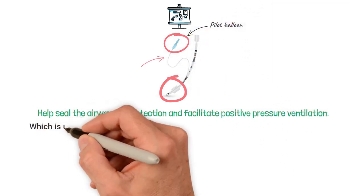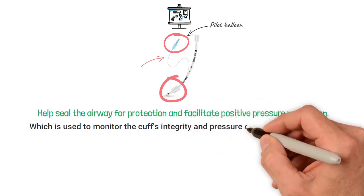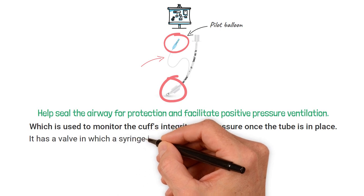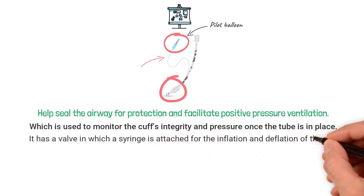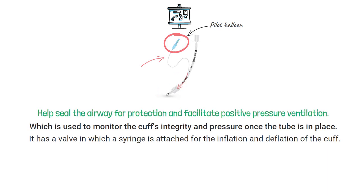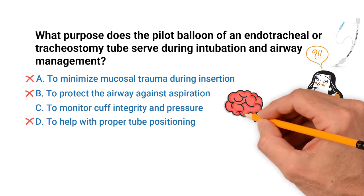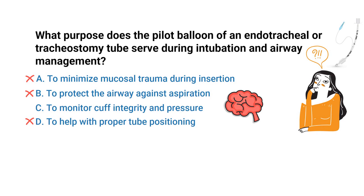The cuff of an endotracheal and tracheostomy tube is designed to help seal the airway for protection and facilitate positive pressure ventilation. However, hanging from the cuff is what's known as a pilot balloon, which is used to monitor the cuff's integrity and pressure. Once the tube is in place, it has a valve in which a syringe is attached for the inflation and deflation of the cuff — simply by pumping air in for inflation or removing air to deflate. You should know that the pilot balloon is not meant to help with tube positioning, preventing aspiration, or minimizing trauma.